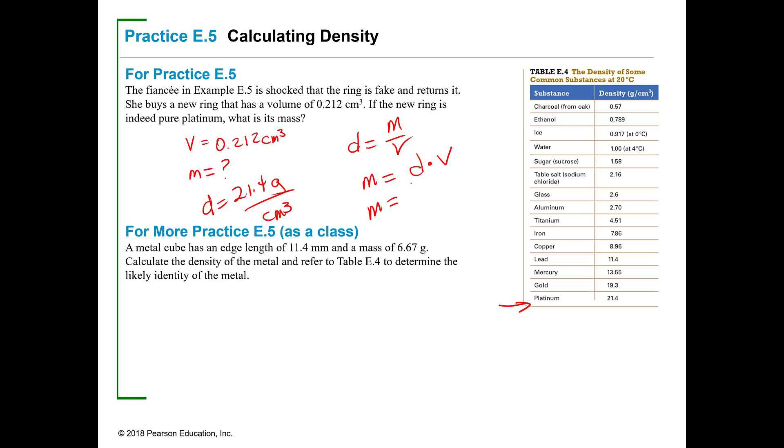The mass should be equal to 21.4 grams per cubic centimeter times 0.212 cubic centimeters, and so that mass should be 4.54 grams. When she weighs that ring this time, it should weigh 4.54 grams.